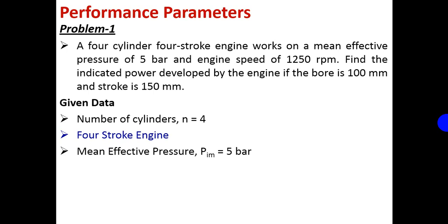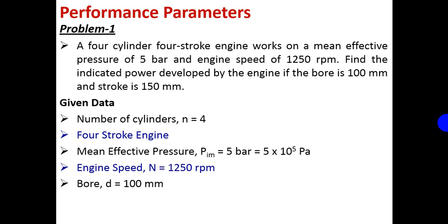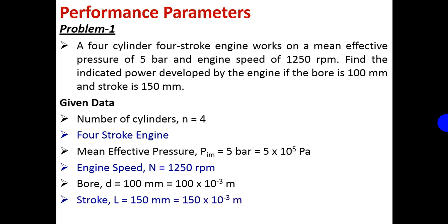The mean effective pressure is 5 bar. If it is given generally as mean effective pressure, use indicated mean effective pressure. So Pim = 5 bar, converting to basic units gives 5 × 10⁵ Pascal. Engine speed N = 1250 RPM. Bore D = 100 mm, converting to meter: 100 × 10⁻³ m. Stroke L = 150 mm, converting to meter: 150 × 10⁻³ m.